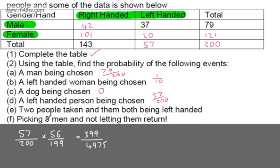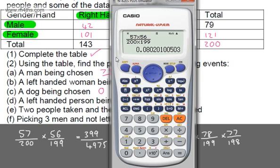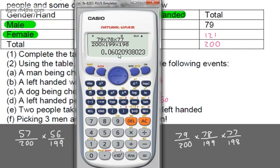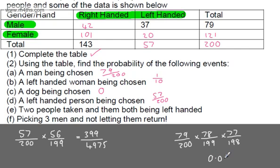Picking three men without replacement — again this is conditional probability, each event dependent on the one before. First man: 79 over 200. Second man: 78 over 199. Third man: 77 over 198. So we calculate (79 × 78 × 77) over (200 × 199 × 198), which gives approximately 0.0602.